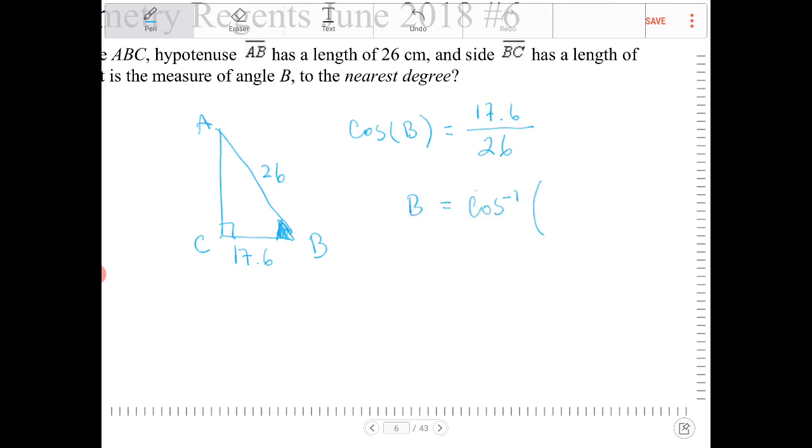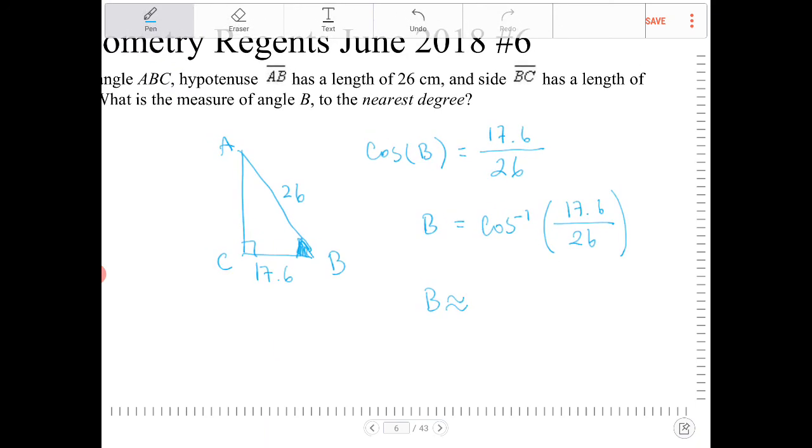The result is B equals inverse cosine of 17.6 over 26. To figure out what this is, we need to input this into the calculator and round to the nearest degree.